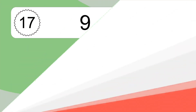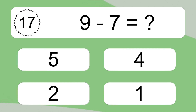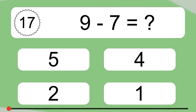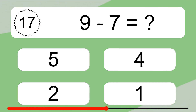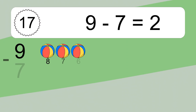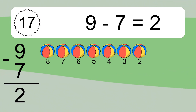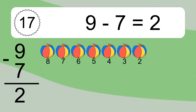9 minus 7 equals what? 9 minus 7 equals 2. Let's count it. 8, 7, 6, 5, 4, 3, 2.